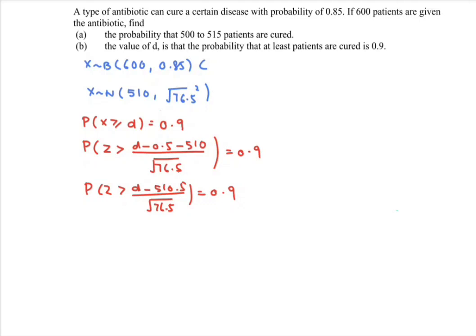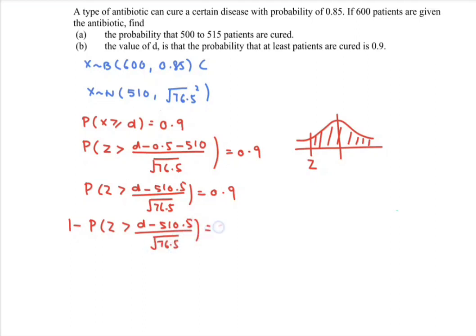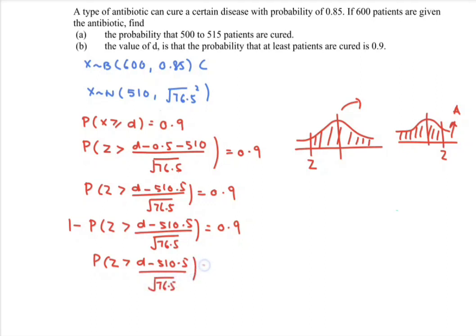Refer to the diagram. The z will be on the left, which is negative, and we shade the region. Very obvious it is 0.9. So we flip the situation and rewrite the formula. It becomes the probability that z is greater than d minus 510.5 over the square root of 76.5. We eliminate the complement part, and rewrite the situation so that z greater than d minus 510.5 over the square root of 76.5 equals 0.1.